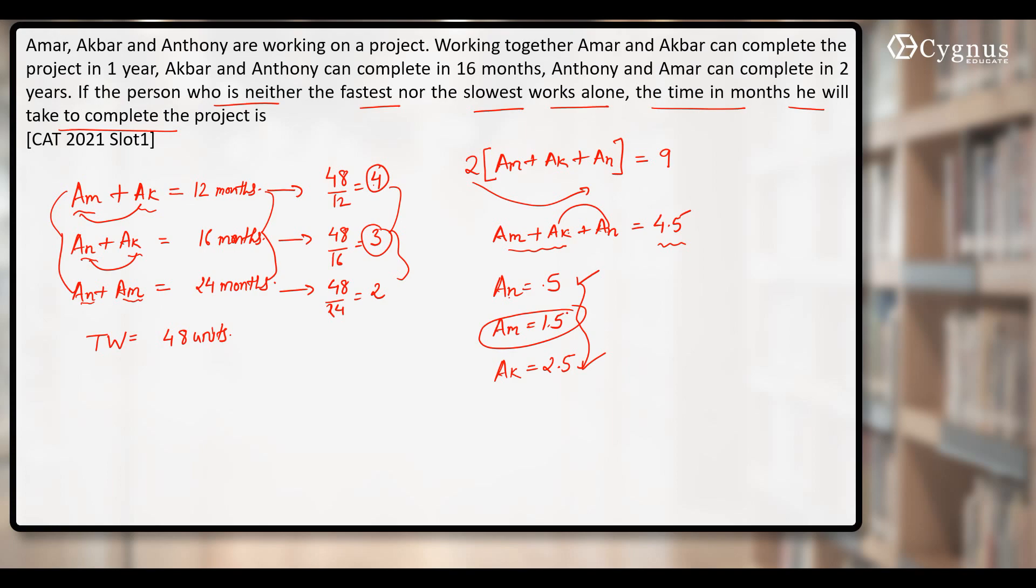He will take how much time to finish the whole work? We know that time is always equal to work divided by rate. How much is the work? 48 units. And one day work of Amar is 1.5 units.